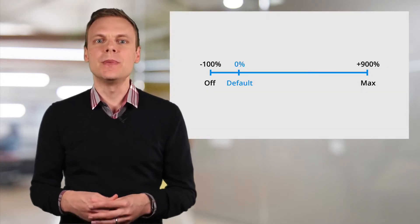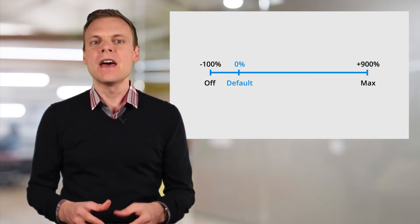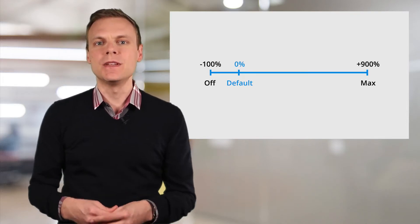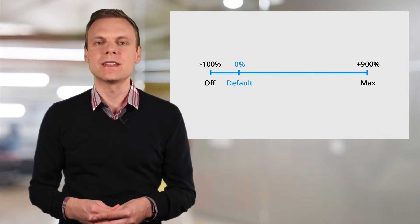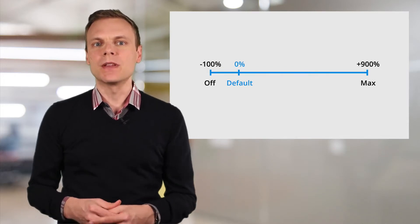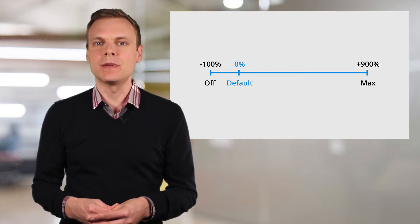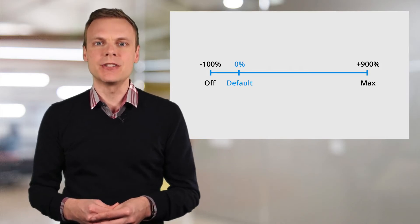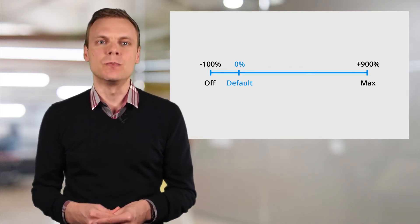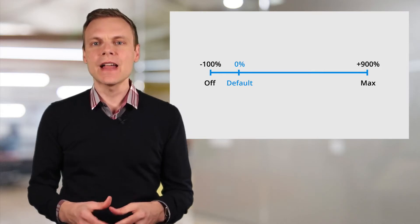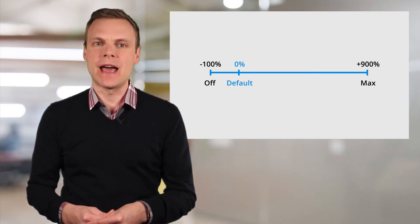By default, there will be no mobile bid adjustment applied to your campaigns. This means that the bids will be the same across all the devices people use to see your ads. For example, if you had a default bid of $1 and a 0% mobile bid adjustment, then the final bid for mobile devices would be $1.